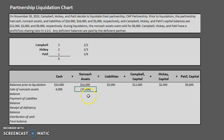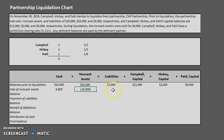That $12,000 loss needs to be allocated according to the profit and loss sharing ratio. Campbell gets one half of the $12,000, Hickey gets one third of the $12,000, and Patil gets one sixth of the $12,000.